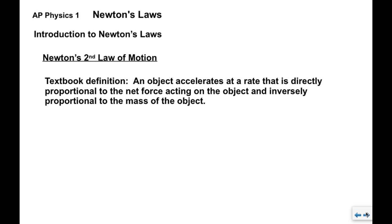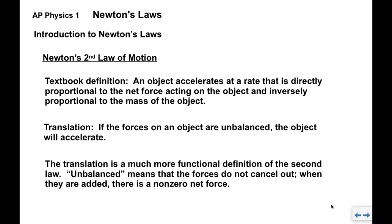Now we move to a more general case: Newton's second law of motion. The textbook definition says an object accelerates at a rate that is directly proportional to the net force acting on the object and inversely proportional to the mass of the object—that's a little convoluted. An easier way, the translation, is that if the forces on an object are not balanced or unbalanced, the object will accelerate. This is a much more functional definition. Unbalanced means that they don't cancel out when they're added up. There is a non-zero net force, and that net force causes the object to accelerate.